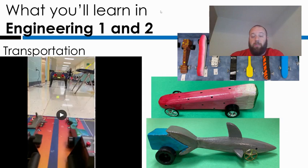The next unit we do is a transportation unit where we create CO2 cars. You can see here on the right there are a lot of different designs that can be made, so you can express your creativity doing that. Then we race them down the hallway and they go about 50 miles per hour.